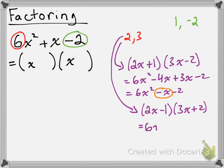So expanding those out, we get 6x squared plus 4x minus 3x minus 2. And collecting like terms, we get 6x squared plus x minus 2, which is exactly what we want. And that tells us that our answer should be 2x minus 1 and 3x plus 2.